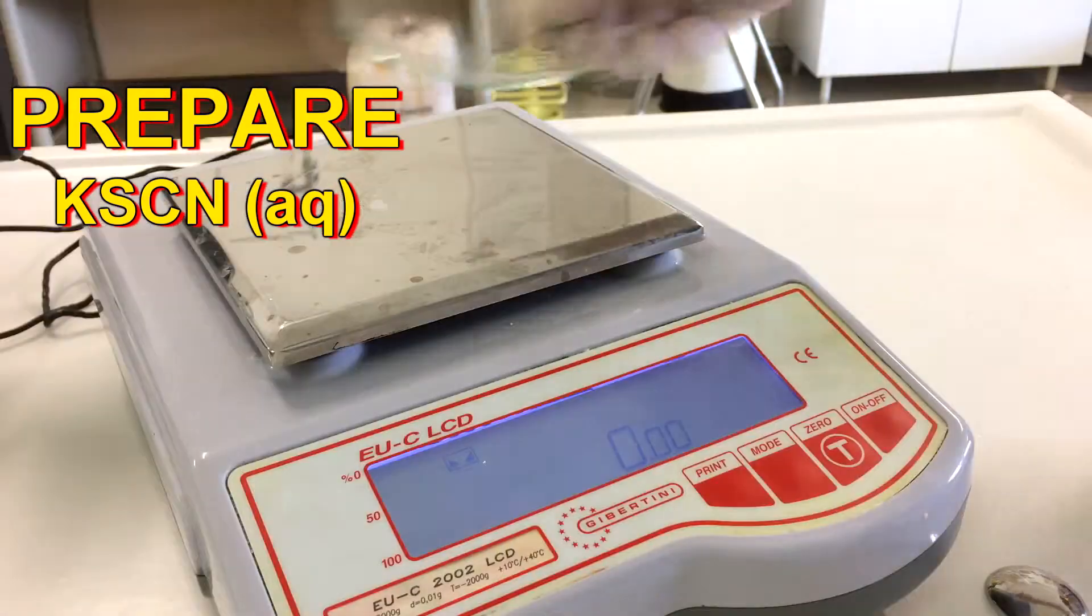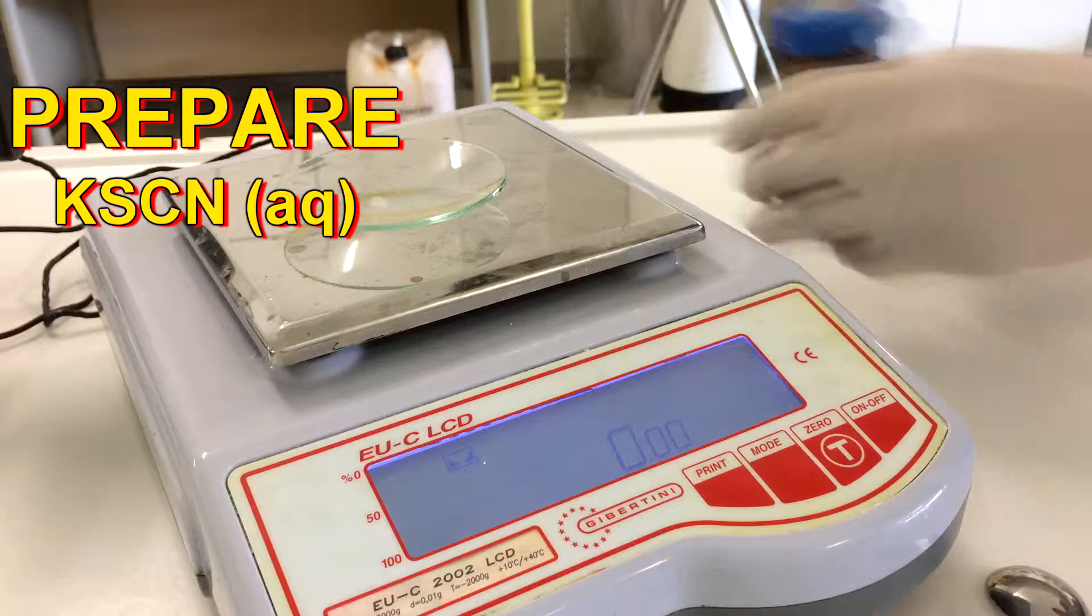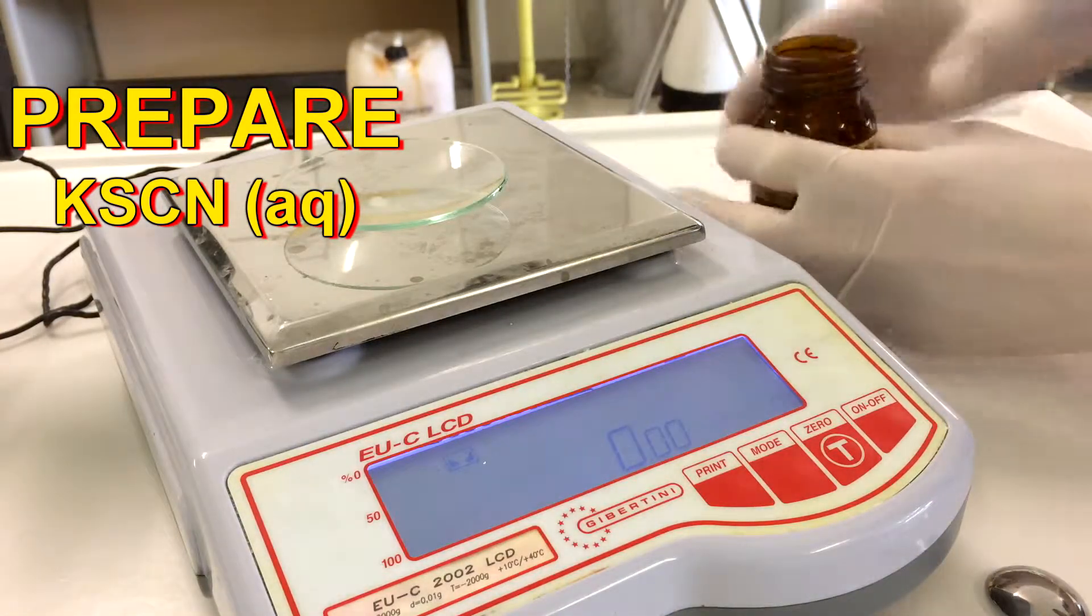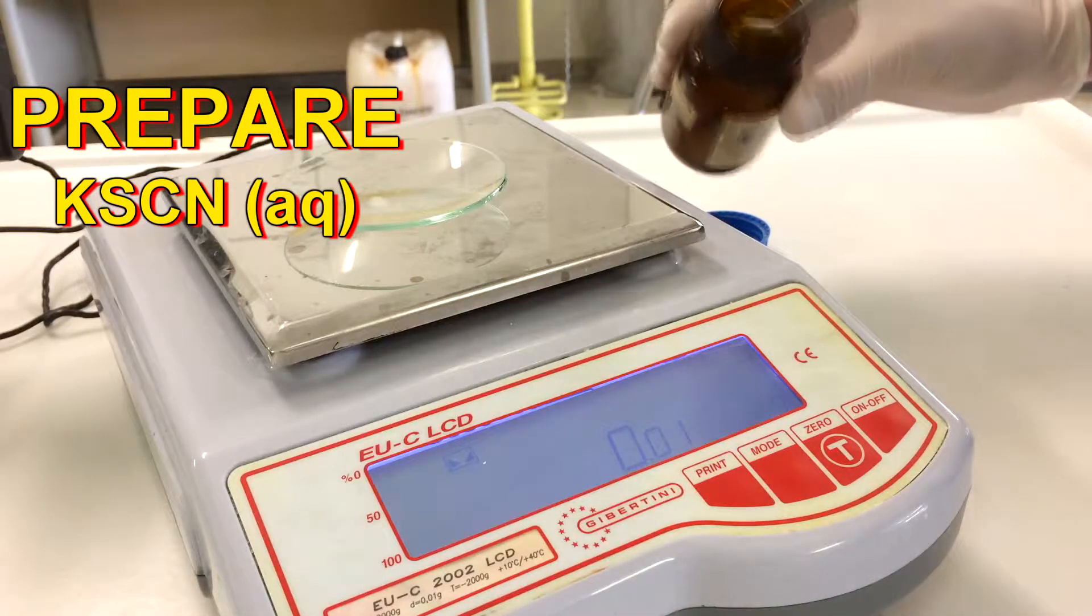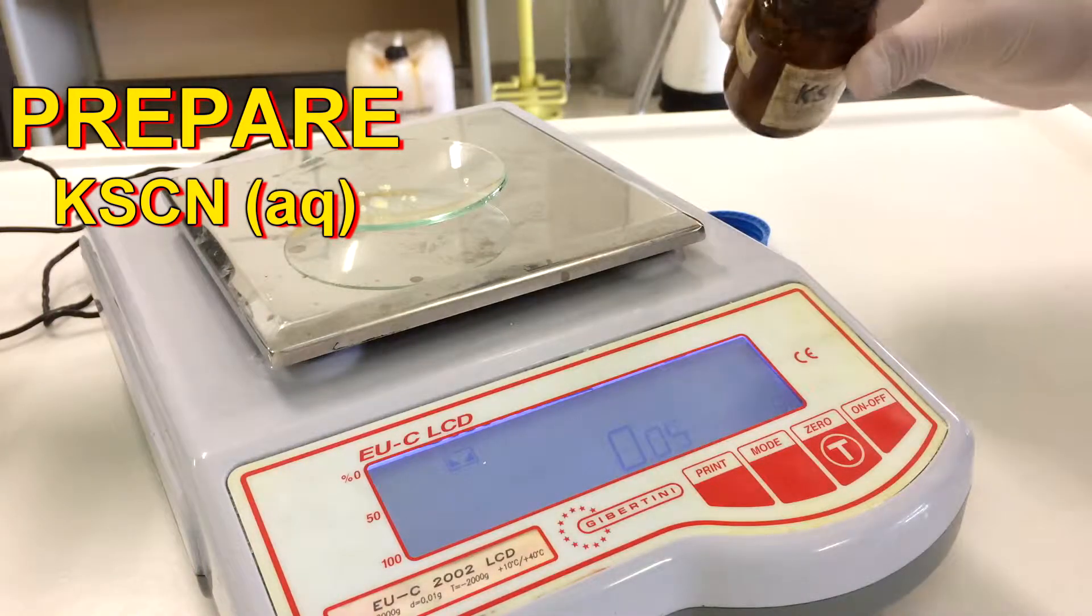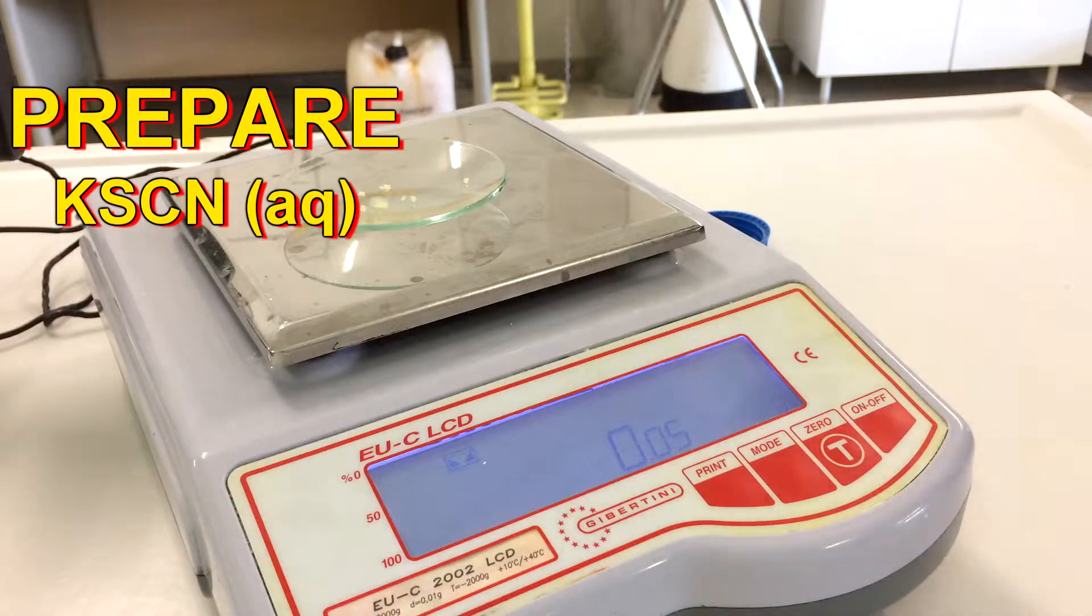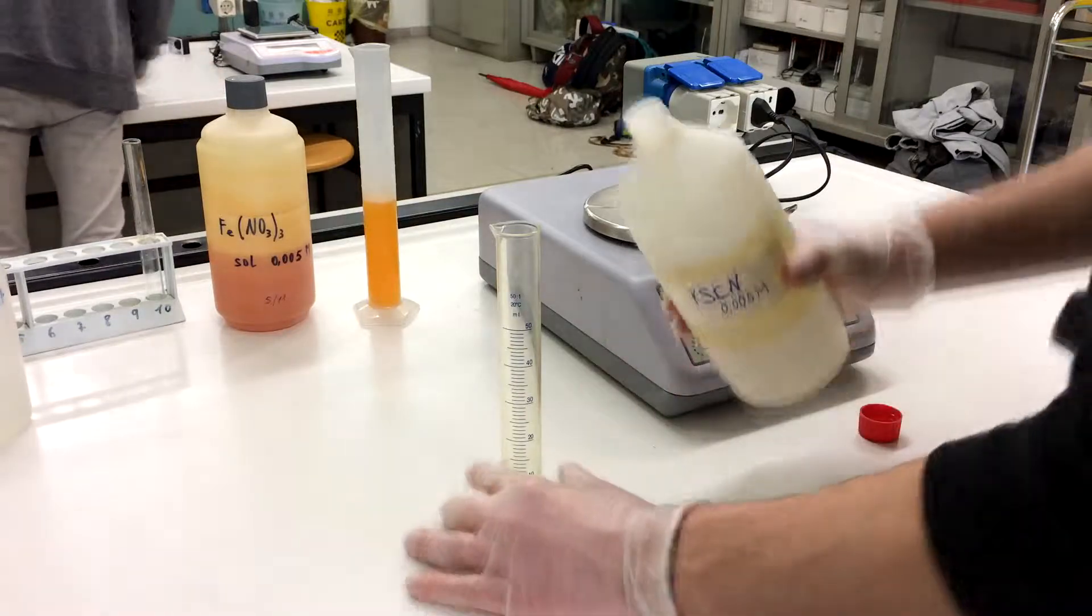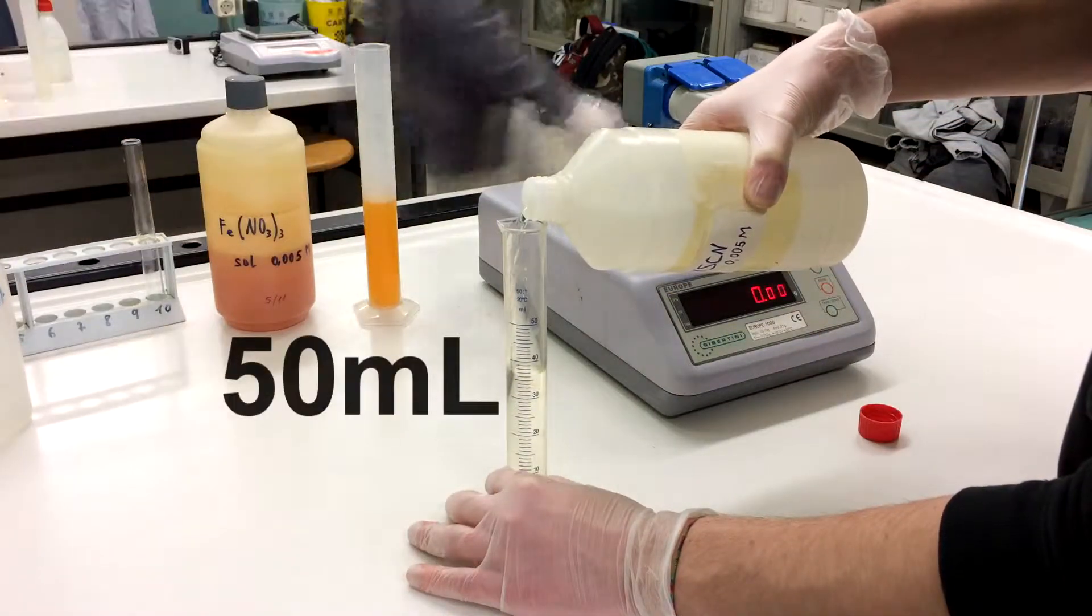After we weigh 0.05 grams of potassium thiocyanate, we pour 50 milliliters into the 50 milliliters graduated cylinder. Then we create the solution of 100 milliliters and pour 50 milliliters into the 50 milliliters graduated cylinder.